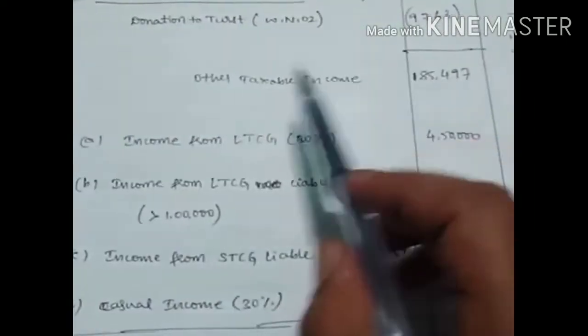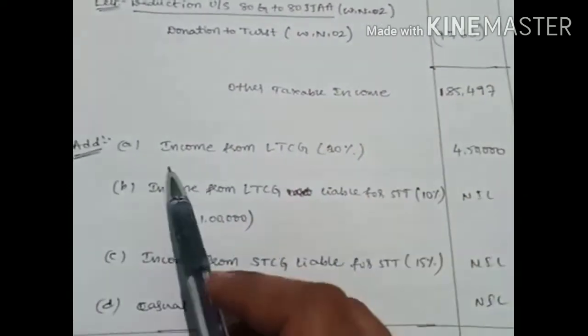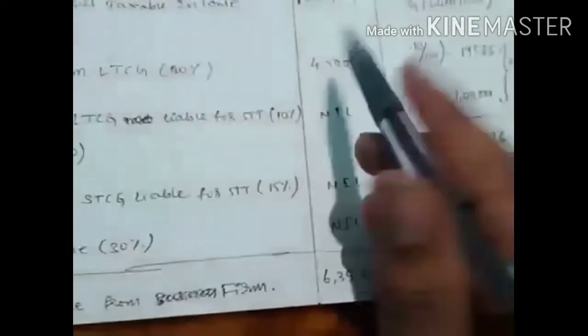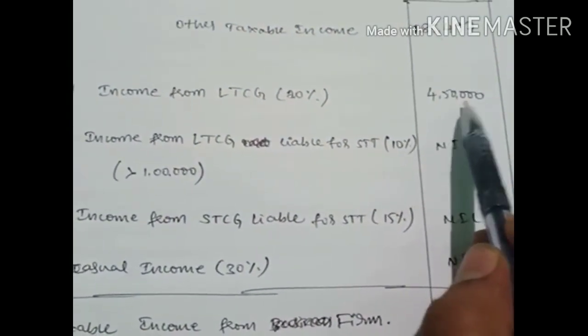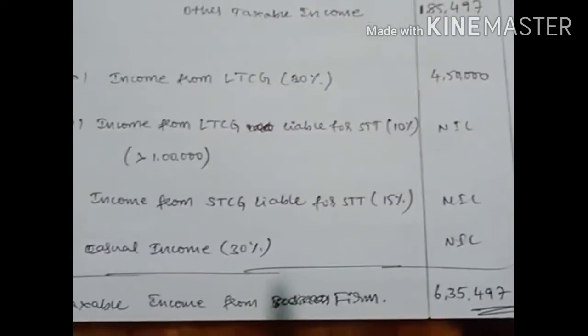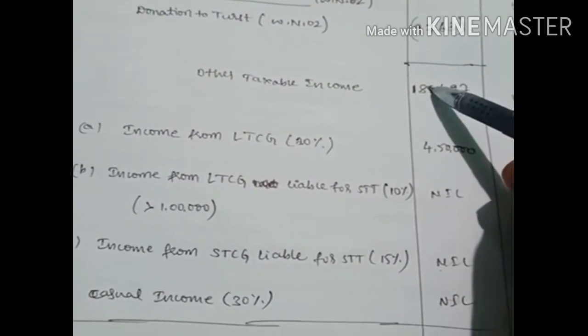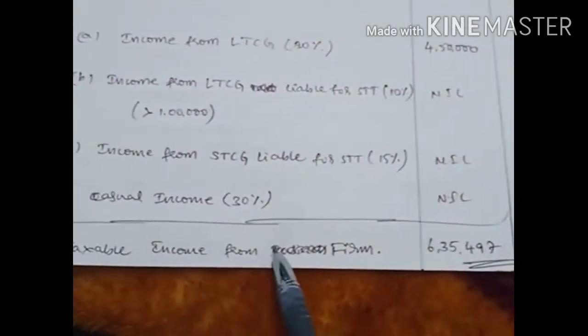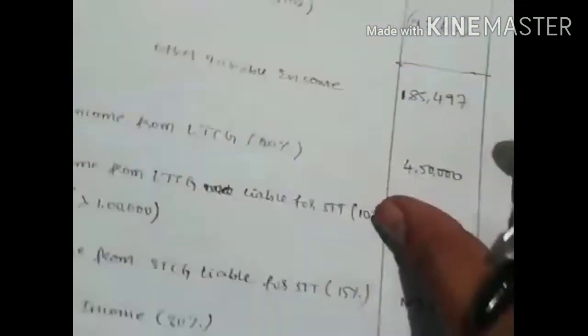After getting other taxable income as 1 lakh 85 thousand 497, add long-term capital gain of 4 lakh 50 thousand (provided in the problem). It comes under special rate of 20 percent, calculated separately. Income from long-term capital gain not liable for STT — nil. Income from short-term capital gain liable for STT — nil. Casual income — nil. Total taxable income of the firm is 6 lakh 35 thousand 497.